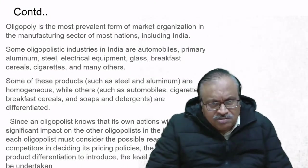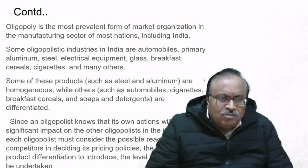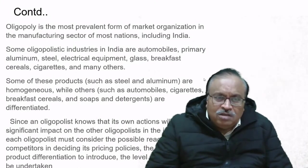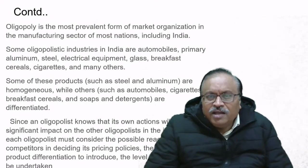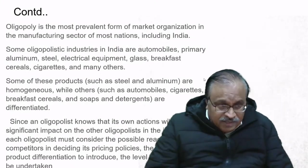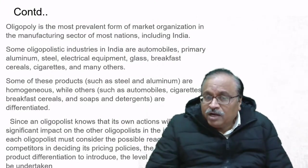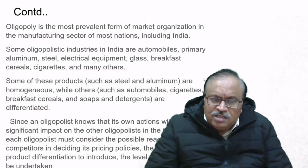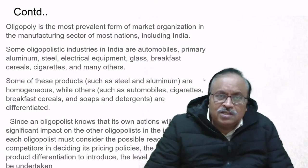Oligopoly is the most prevalent form of market organization in the manufacturing sector of most nations. Some oligopolistic industries in India are automobiles. Some products are homogeneous—steel, aluminium—while others are slightly differentiated like automobiles, cigarettes, breakfast cereal, and soaps. Since each oligopolist knows its actions will significantly impact the others, each must consider the possible reactions of competitors.